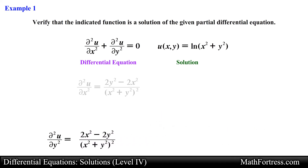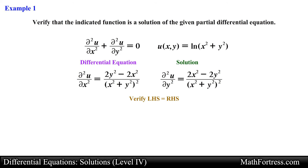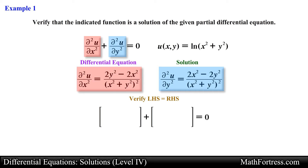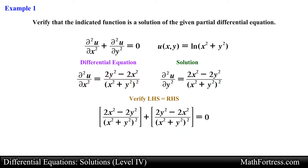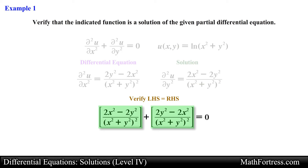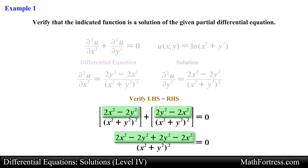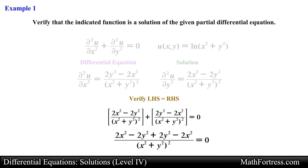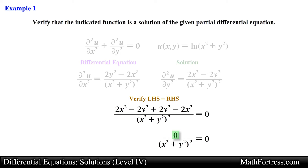Having found the second partial derivatives, we proceed with the substitution step and make sure the left and right hand sides of the equation are equal to each other. Carrying out the substitutions, we obtain the following expression. Next, we add the two expressions on the left hand side. Conveniently, they both have a common denominator, so it's just a matter of adding the numerators. Collecting like terms, the numerator simplifies to 0, and 0 divided by (x² + y²)² equals 0.